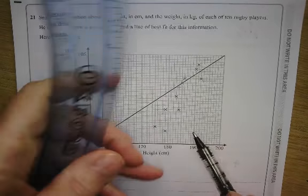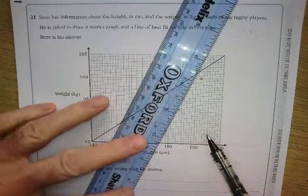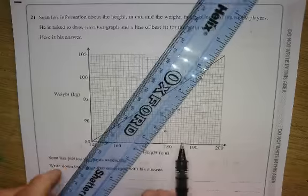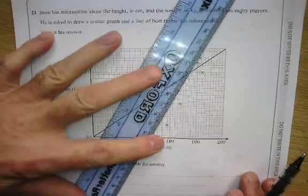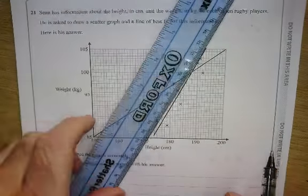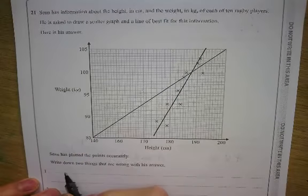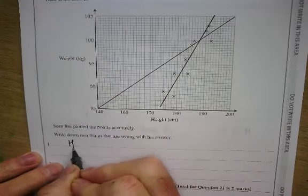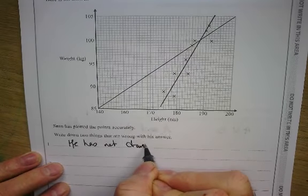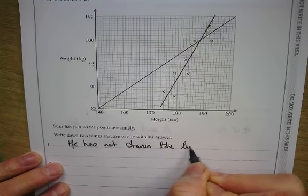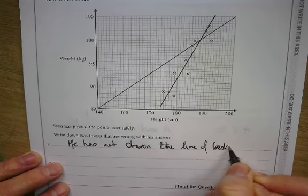Well, the line clearly should be along there, shouldn't it? That's where the line should be. So the first thing I would say is, Sean, that's where the line should be. So I'd write in here, he has not drawn the line of best fit correctly.